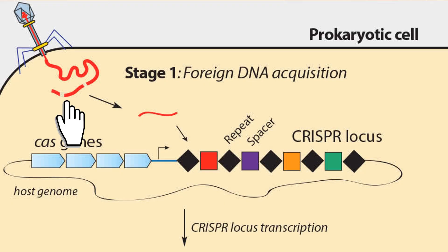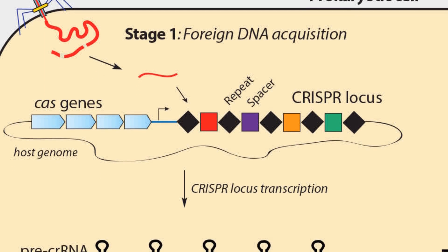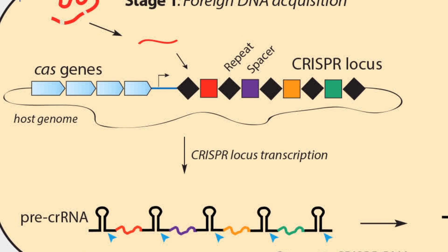Step two is the expression of the CRISPR array. Once that viral DNA is integrated as one of these spacer sequences between the palindromic repeats of a bacterial CRISPR array, the bacteria can then transcribe the entire CRISPR array and form what we call a pre-CRISPR RNA strand. That really long strand of pre-CRISPR RNA is going to have to be processed, and this is where the short palindrome sequences come into play.